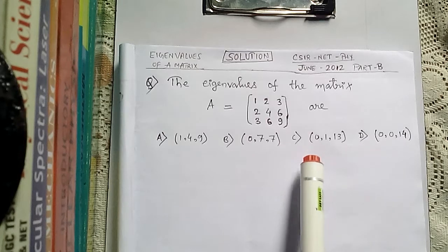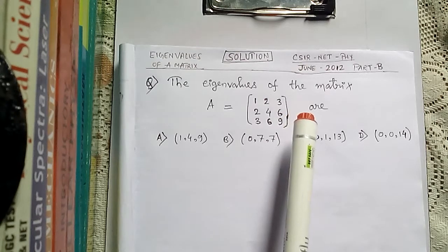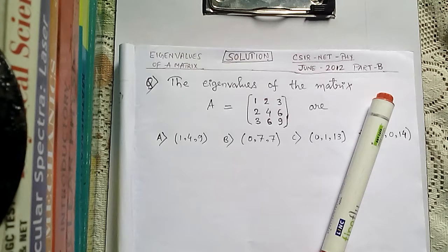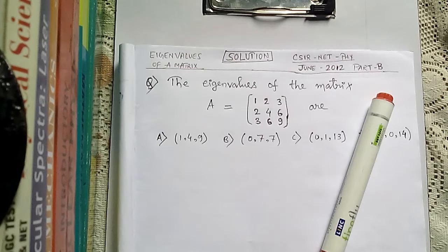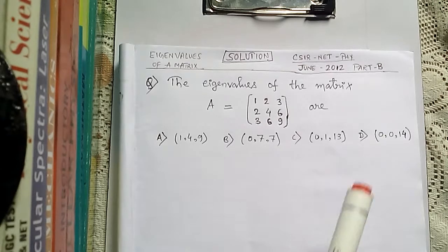For finding eigenvalues from a square matrix, we know there are two standard methods: one is the characteristic equation and the other is the characteristic polynomial. Using any one, you can find the eigenvalues of a matrix. What's extra we will do in this video is find eigenvalues using both methods one by one, to know both methods accurately and see which is more convenient and suitable for you.